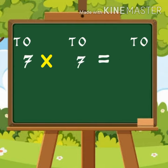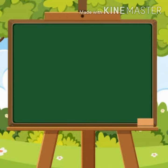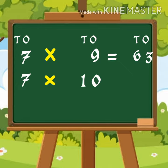Seven sevens are forty nine. Seven eights are fifty six. Seven nines are sixty three. Seven tens are seventy.